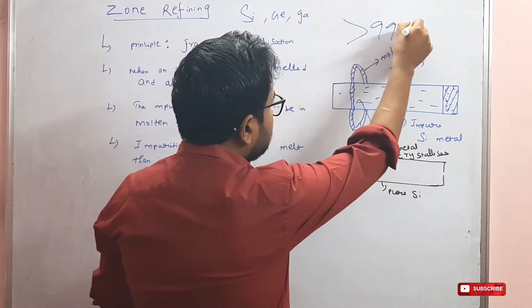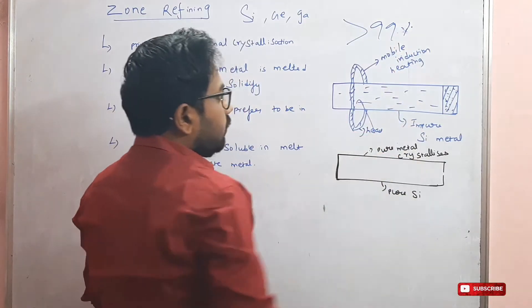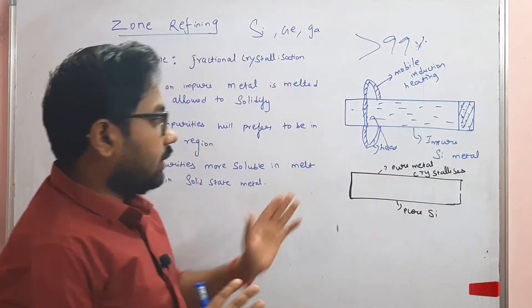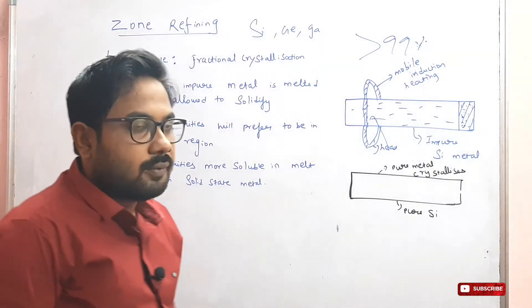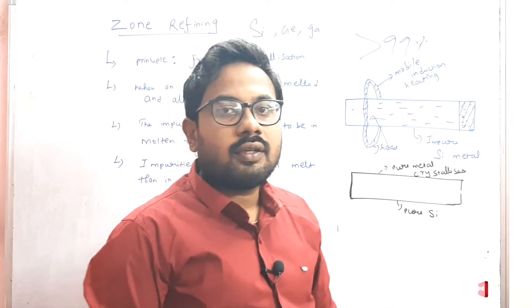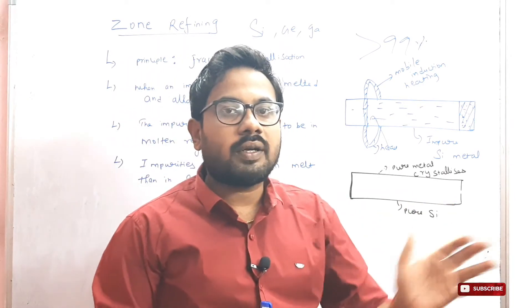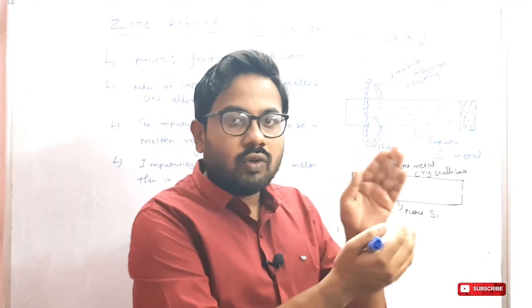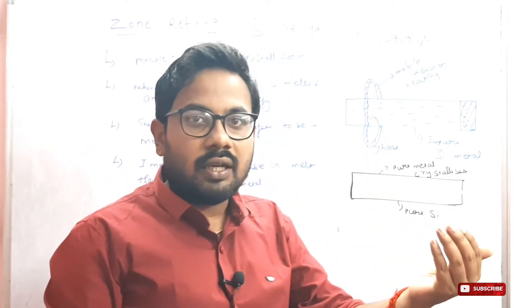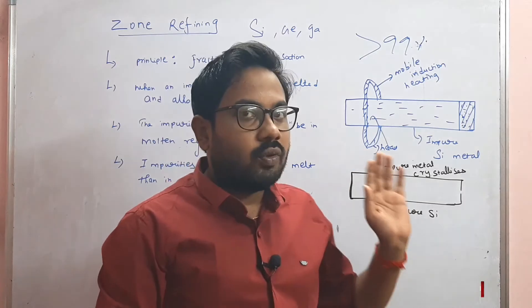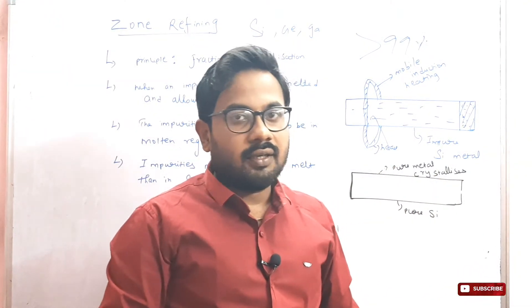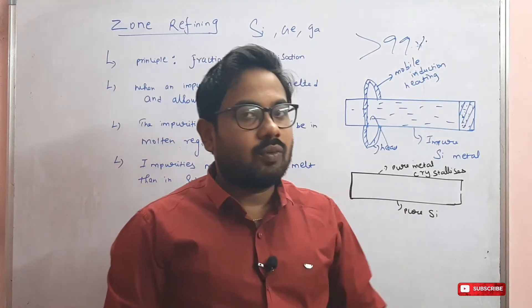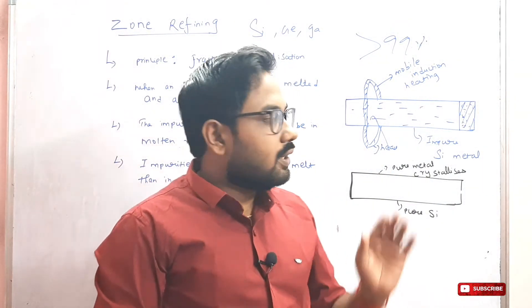Greater than 99 percent pure metal is obtained using this process. The impure silicon metal is melted in the molten region and the repeated induction heating purifies the bar. We keep impurities together at one end. Finally, pure crystallized metal is obtained.